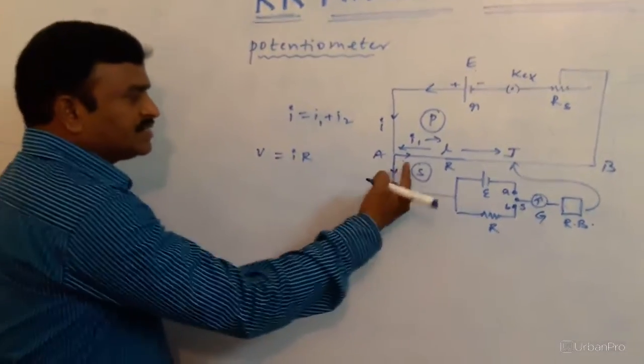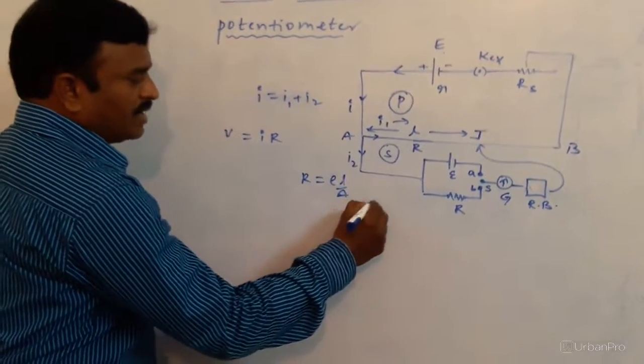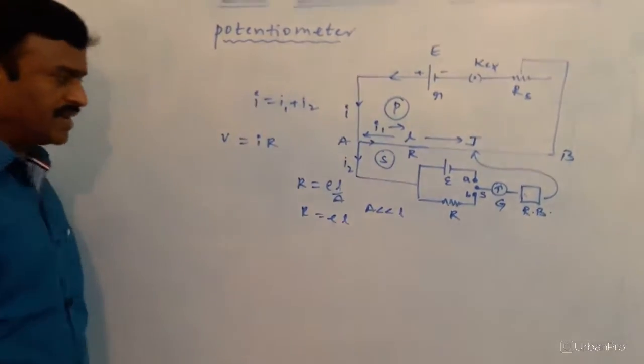Let us assume that resistance R is equal to ρ into L by A. As area is very very less than length, then R is equal to ρ into L, we can write.